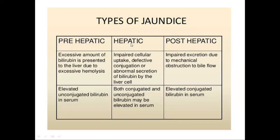Hepatic or hepatocellular jaundice can be due to excessive alcohol consumption, viral hepatitis, cirrhosis of the liver, or hepatocellular carcinoma. In hepatic jaundice, there is impaired cellular uptake, defective conjugation, or abnormal secretion of bilirubin by the cells. So in the plasma, both conjugated and unconjugated bilirubin will be raised.